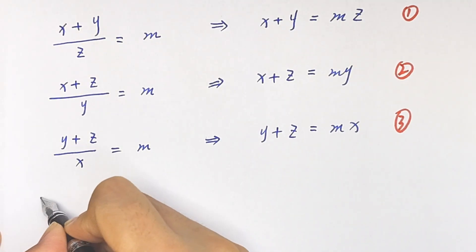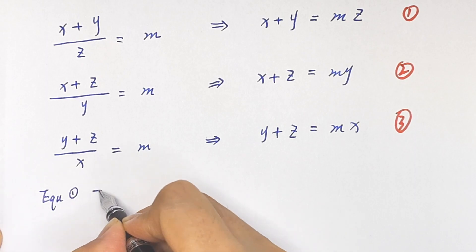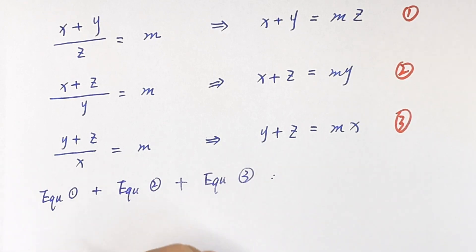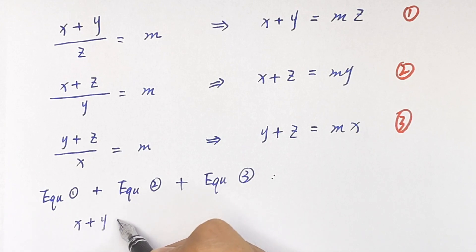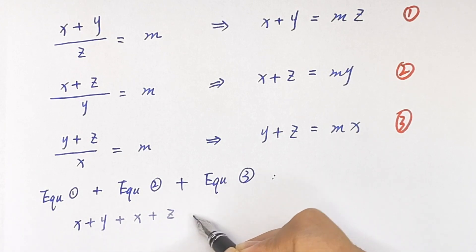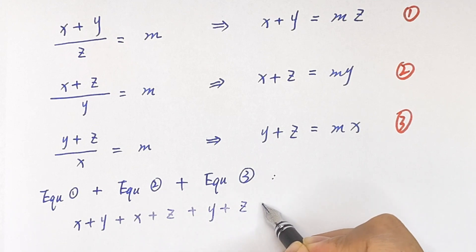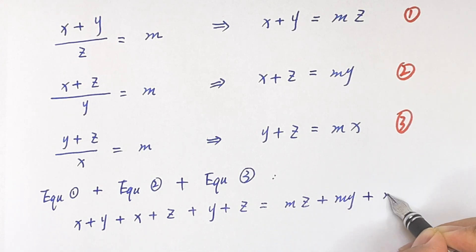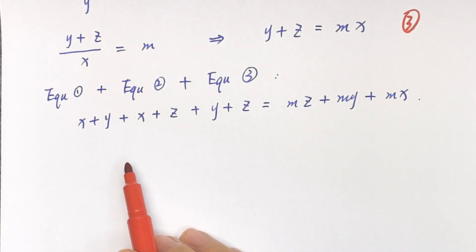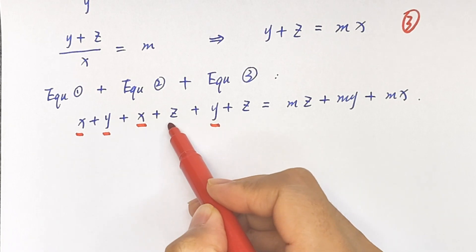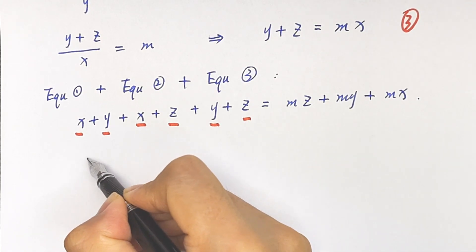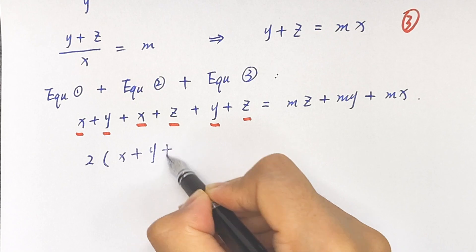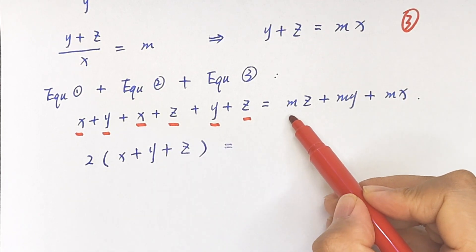Now we label these as equation 1, equation 2, and equation 3. We add equation 1 plus equation 2 plus equation 3: (x plus y) plus (x plus z) plus (y plus z) equals m·z plus m·y plus m·x. On the left side, we have 2x, 2y, and 2z, so it becomes 2 times (x plus y plus z).